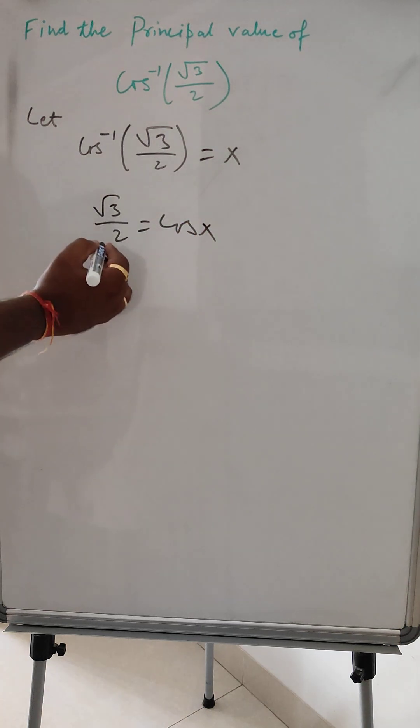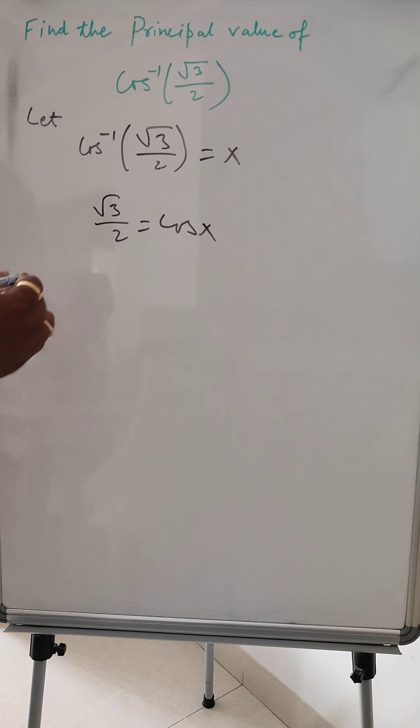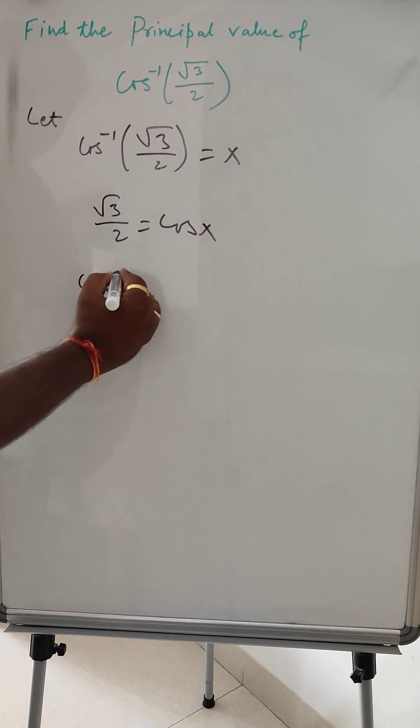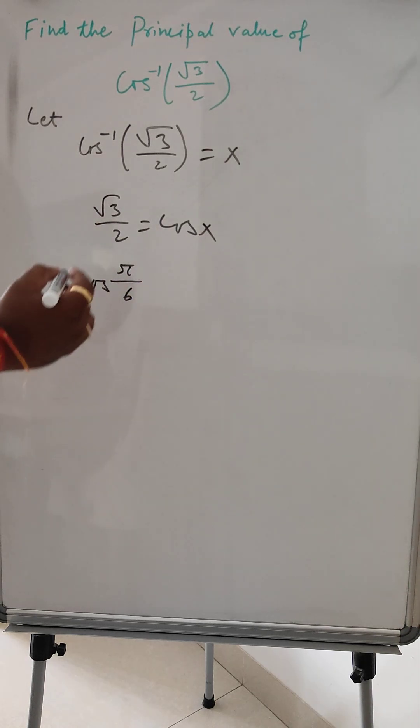Now √3/2 is the value of cos 30°, so we can write cos(π/6).